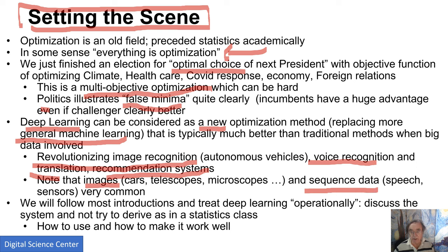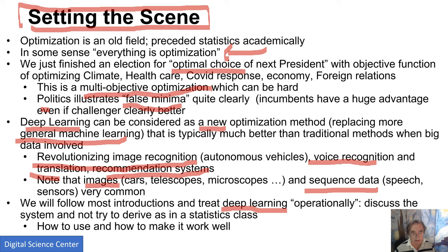Another type of data which has its own deep learning methods is sequence data. Speeches or audio signals can be thought of as a sequence of pressure waves which get translated into digital form and then analyzed to convert the digital audio signals into words. It does that by learning from previous recordings of people's voices.